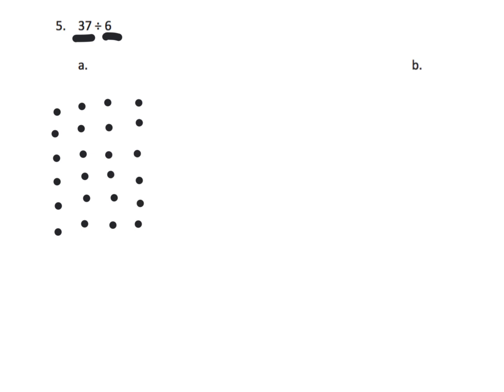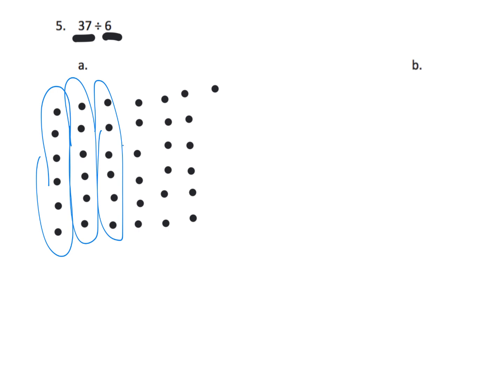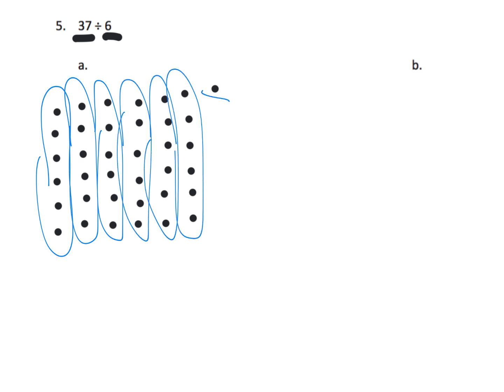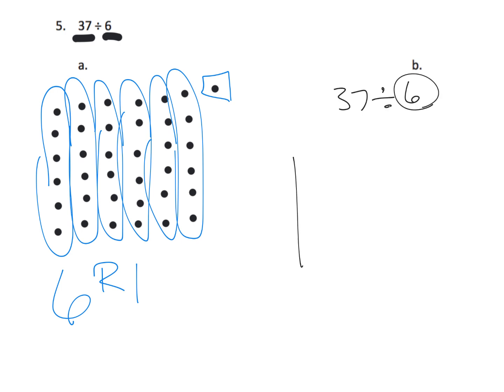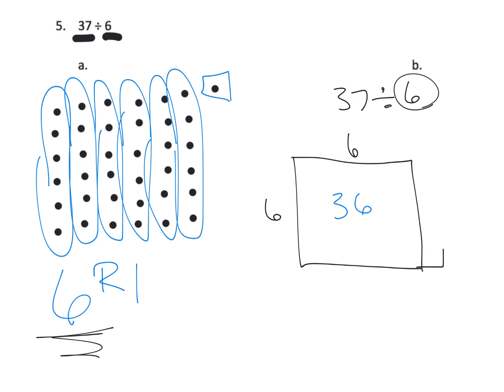One more problem for good measure. 37 divided by 6 means we count up to 37 with 6 in each column. Counting gives us 6 groups with 1 left over, so our answer is 6 remainder 1. For the area model, that 6 tells us our rectangle is going to have a height of 6, and because we just did it over here, we know it's going to have a width of 6. That means we've used up 36 square units, and we have 1 little square unit left over. The answer is 6 remainder 1.